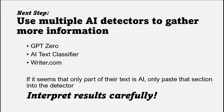Once you think it might be AI, your next step is to use some AI detecting software. The three tools I've been using are GPT-0, which is created by a programmer; AI Text Classifier, which is created by the same people who made ChatGPT; and writer.com, which is supposed to help writers figure out if a search engine is going to flag their work as AI generated.